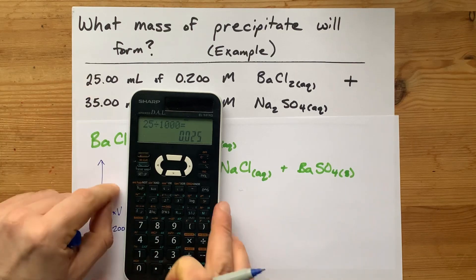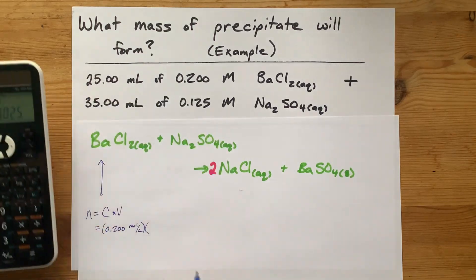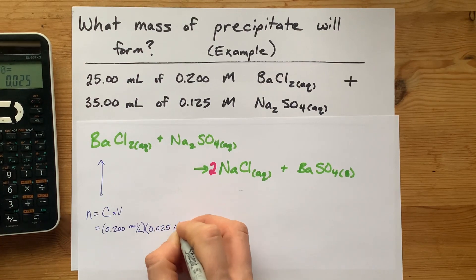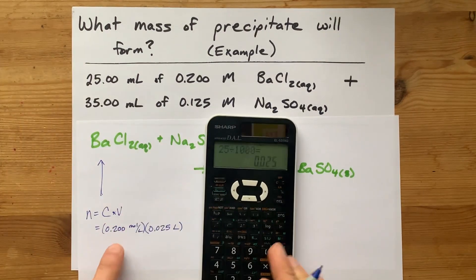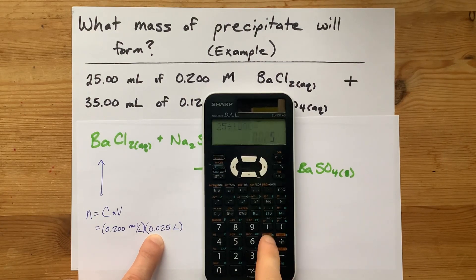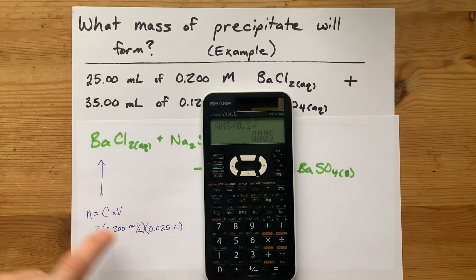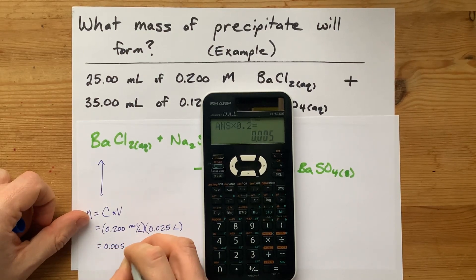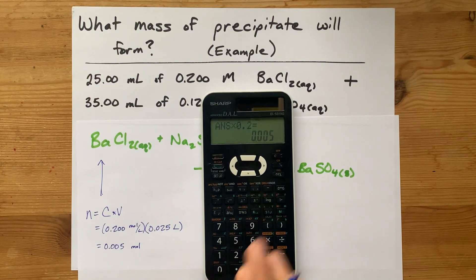You're really just moving the decimal place. One, two, three spaces to the left. But hey, use your calculator if it makes you happy. 0.025 liters. All right. I'm going to multiply these. I'm going to take that number that I just calculated times 0.2. I end up with 0.005 moles of BaCl2.